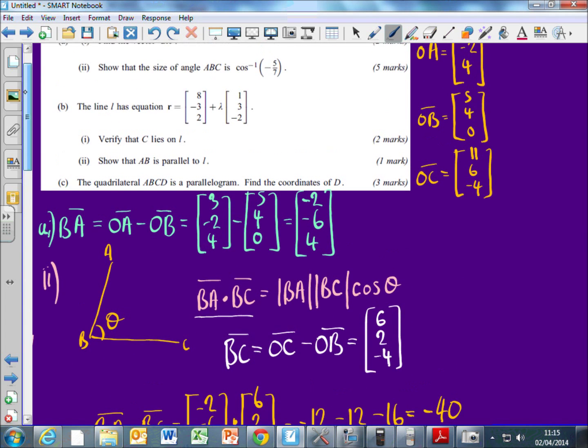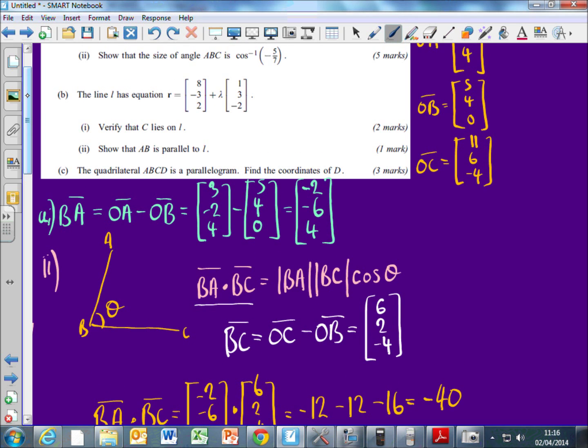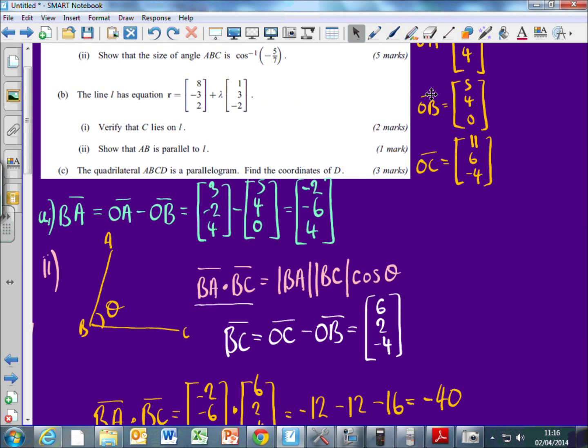Last bit. To verify C lies on the line, show that A to B is parallel to L. And that's just one mark. Can someone tell me how to do that? We've done A to B, haven't we? Oh, we've done B to A. So can someone talk me through how to do this? How do we show that they're parallel? Right. So this is part B2. Now, from part A, we got that B to A, we got the vector of B to A. Can you tell me what that is? Minus 2, minus 6 and 4. Brilliant.